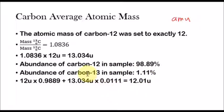So from there, they took the mass of carbon-12 and multiplied it by the abundance, and then they added that to the mass of carbon-13 and multiplied it by the abundance in order to get the average atomic mass. So they took 12 atomic mass units times 0.9889, which is the abundance of carbon-12, and they took the mass of carbon-13, 13.034, and multiplied it by the abundance, and they got 12.01 atomic mass units.